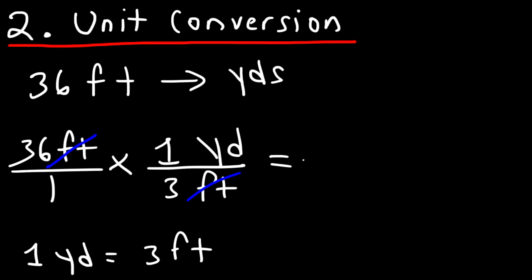Now we have a one in front of the unit yard and a three in front of the unit feet. And so we're going to set it up this way. This tells us that we need to divide whenever you have a number on top and one on the bottom. So we're going to divide the top number by the number on the bottom. 36 divided by 3 is 12. And so 36 feet is equivalent to 12 yards.